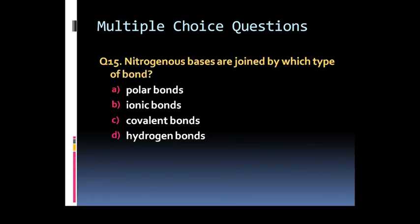Question 15: Nitrogenous bases are joined by which type of bond? Option A: polar bond. Option B: ionic bonds. Option C: covalent bonds. Or option D: hydrogen bonds.